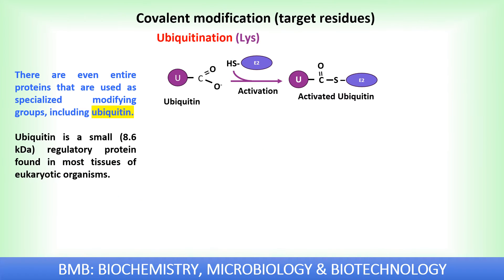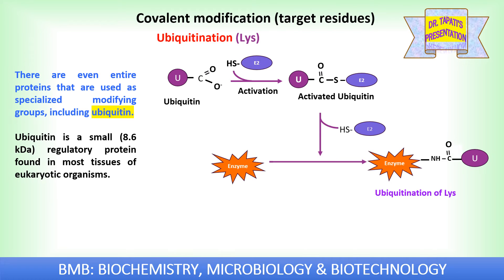In a few cases, entire proteins are used as specialized modifying groups, such as ubiquitin. Ubiquitin is a small regulatory protein found in most tissues of eukaryotic organisms. The ubiquitin group is transferred from an activating enzyme to lysine residues present in the target enzyme.